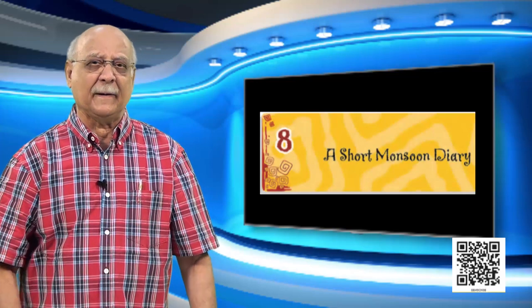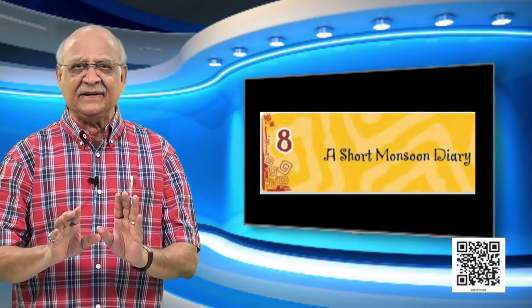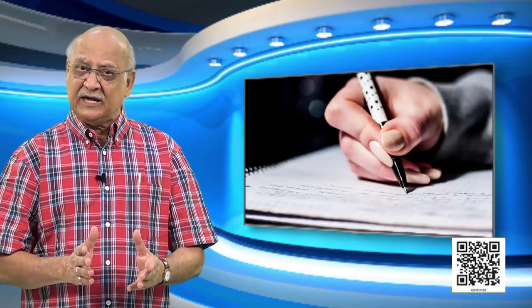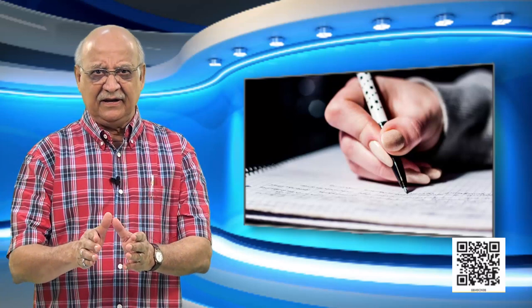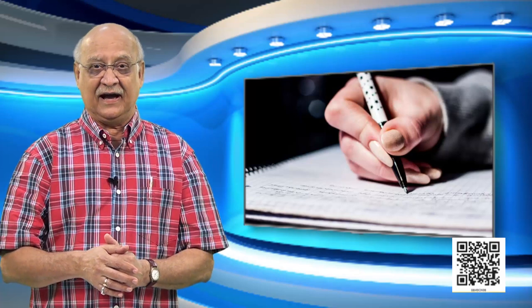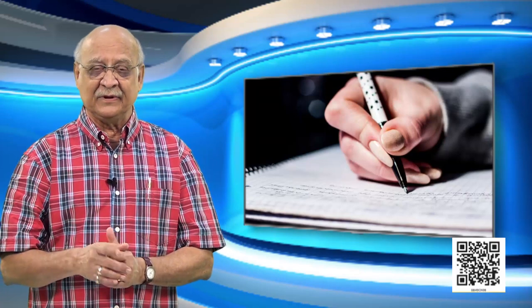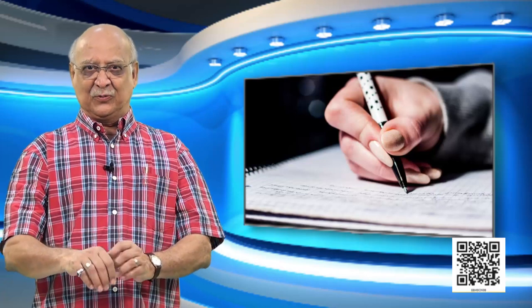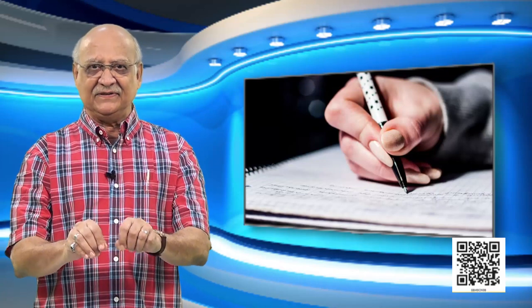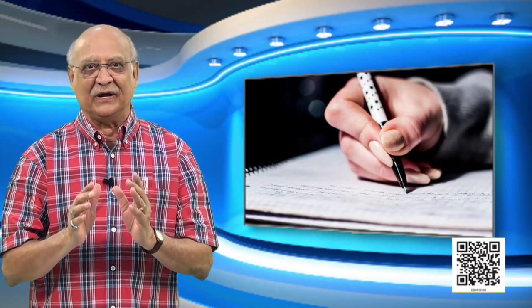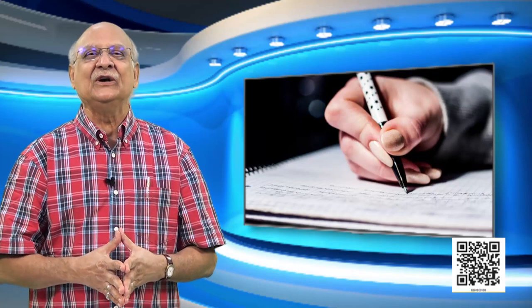Before we begin, let's understand what we mean by a diary. Do you write a diary? Do you keep one? In a diary, you write whatever happened during the day and your own impressions and you record them. But the most important thing in a diary is the date. You put a certain date and under that date you write all kinds of things, and that becomes a beautiful record. And today we are going to look at Ruskin Bond's diary.